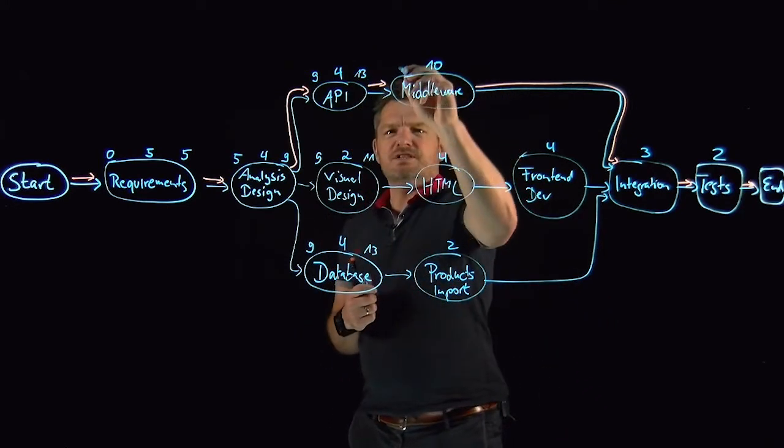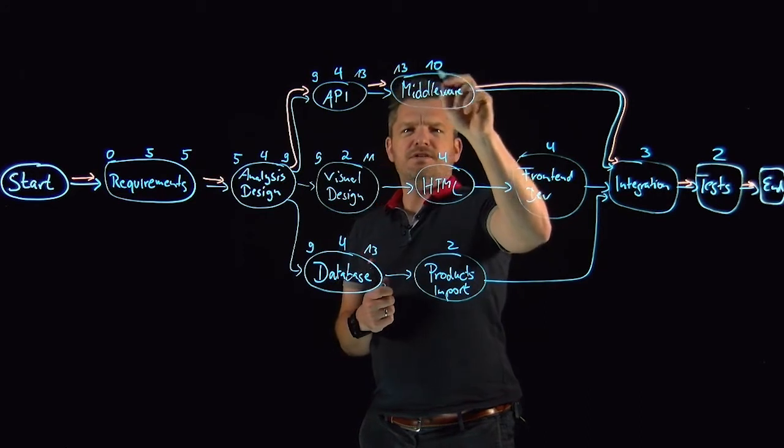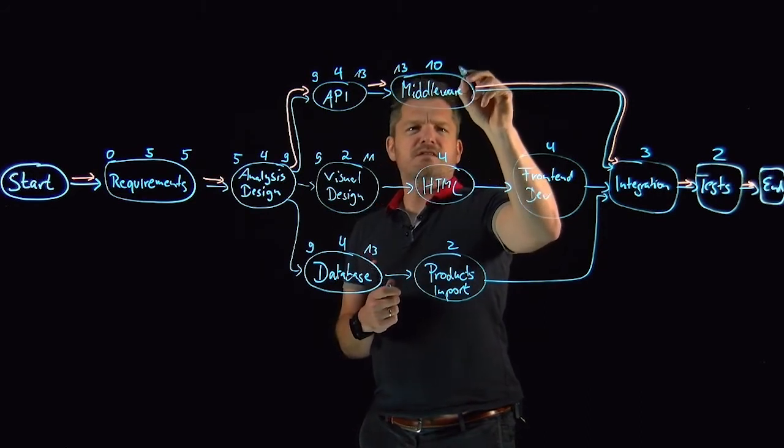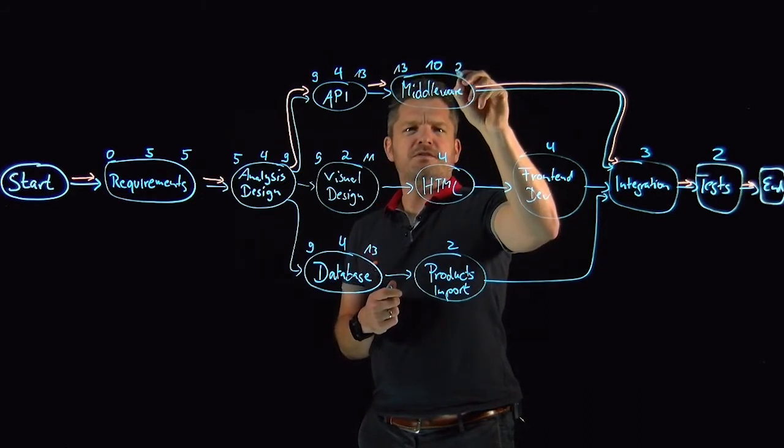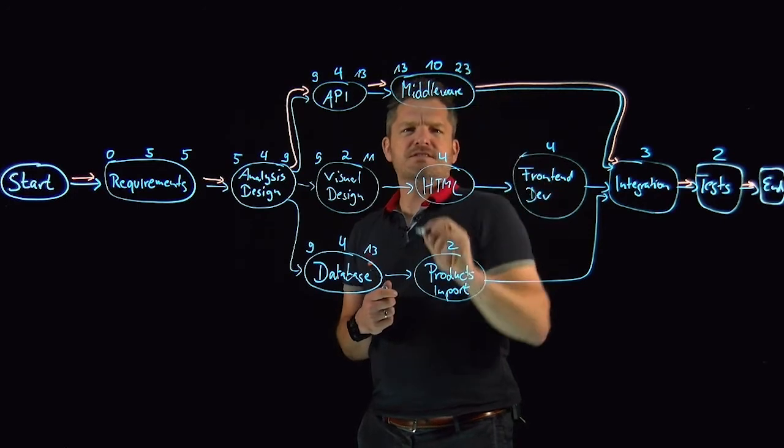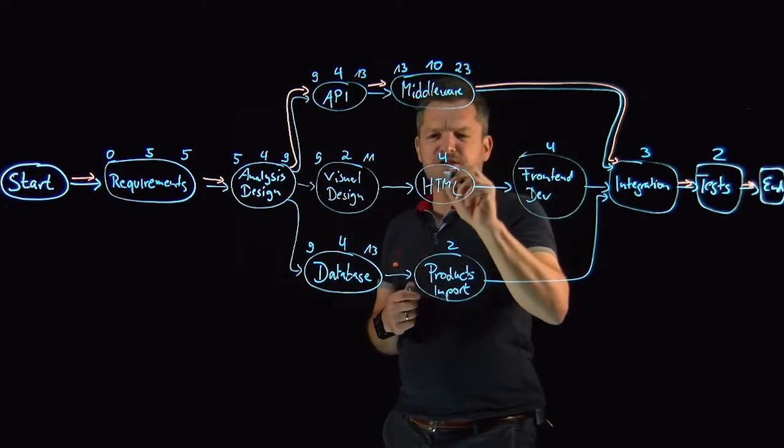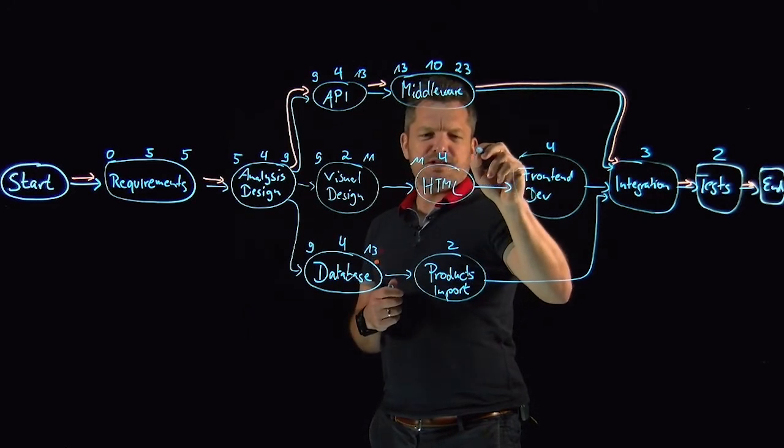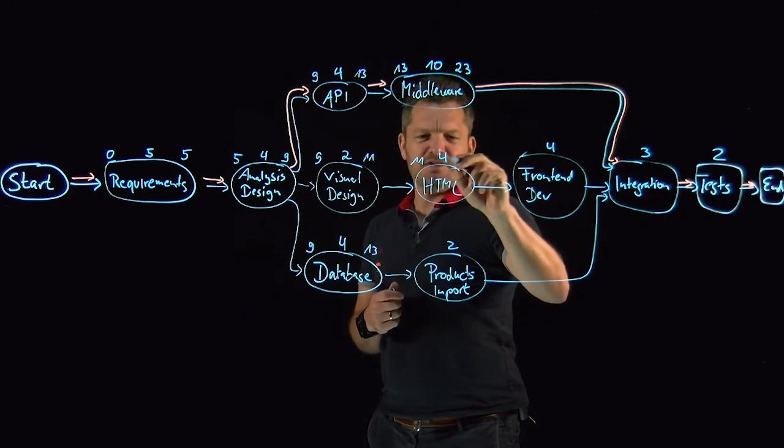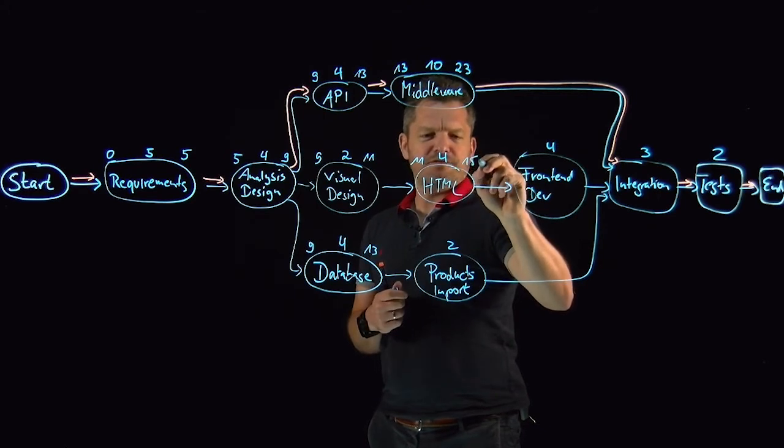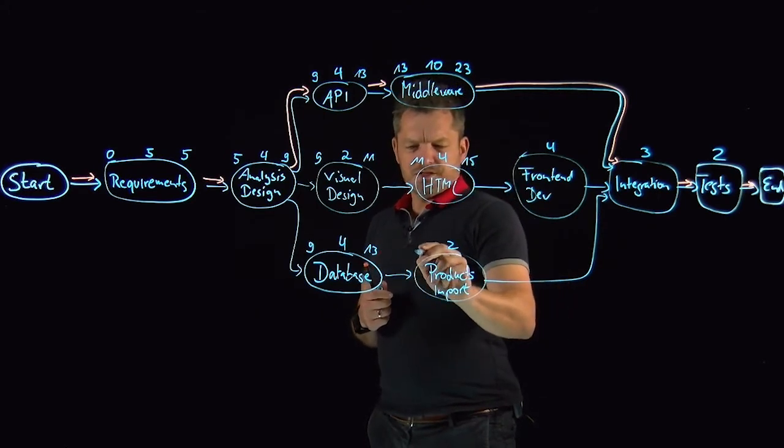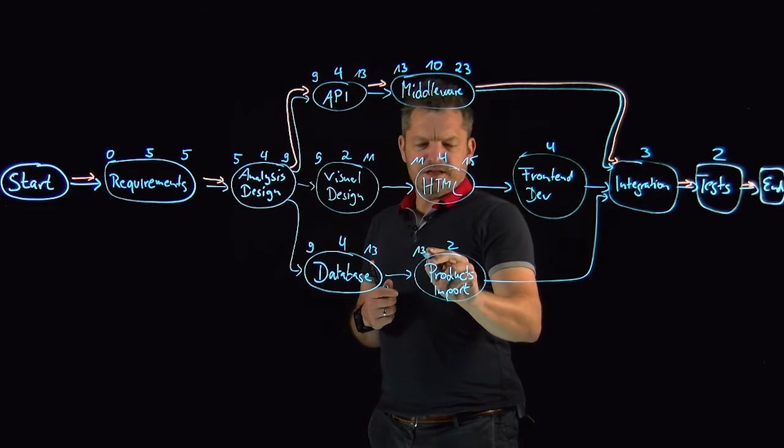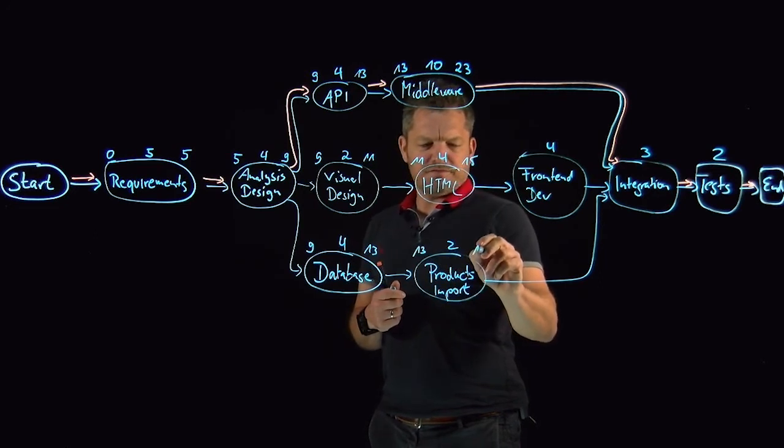We can take it again over. We have thirteen over here. We have thirteen over here. Thirteen plus ten we have twenty-three as earliest finish date. Take over eleven as earliest start for HTML plus four days of duration for this development. We have fifteen. Start at day thirteen plus two days. Fifteen days.